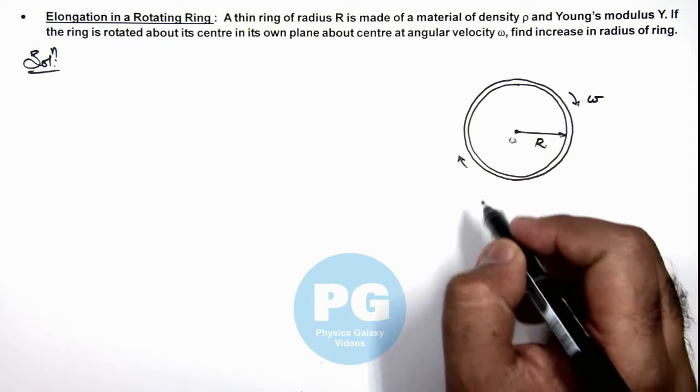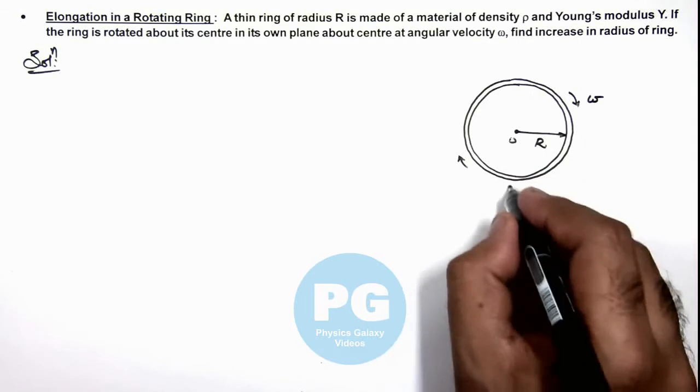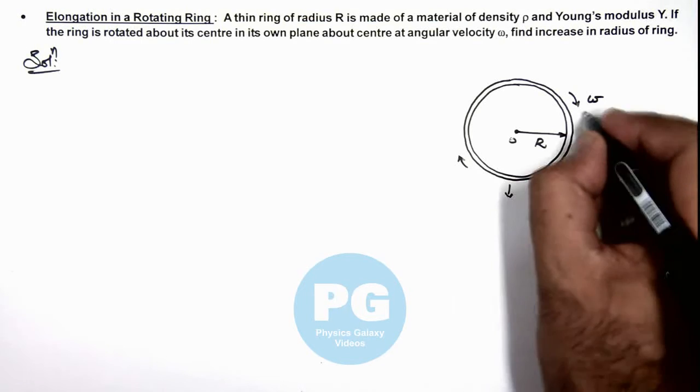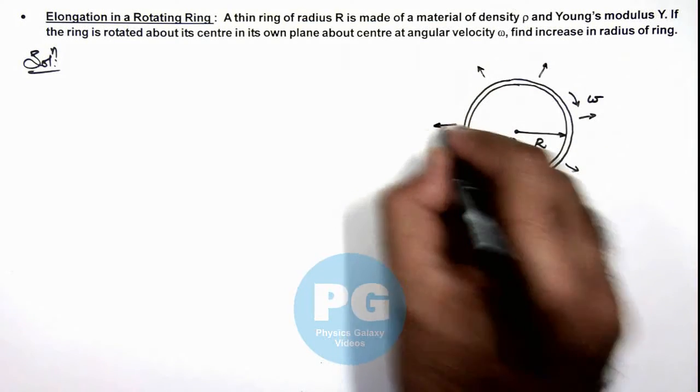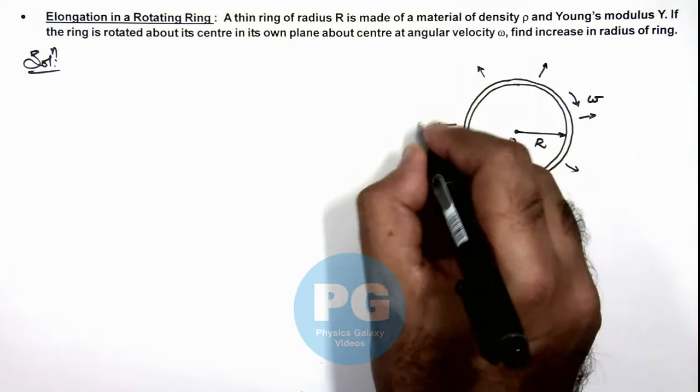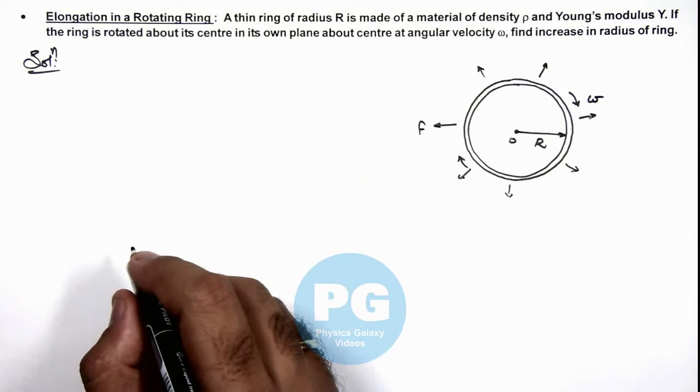Then here due to the rotation, centrifugal forces will act at all elements of the ring in radially outward direction, and we can calculate this centrifugal force on the ring.